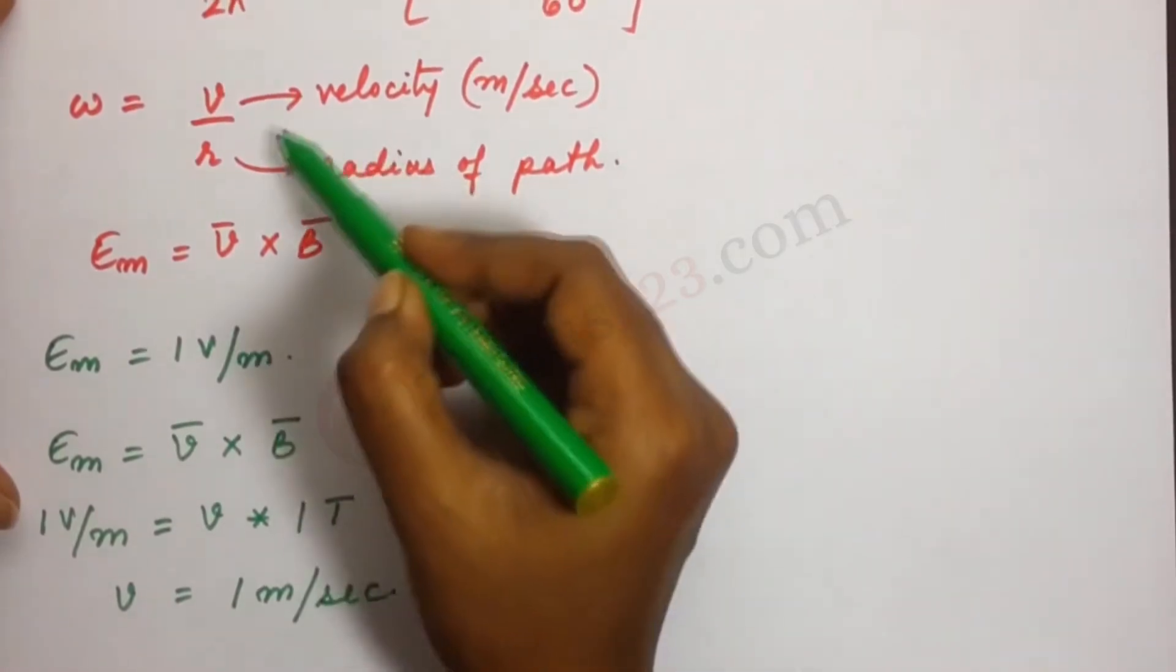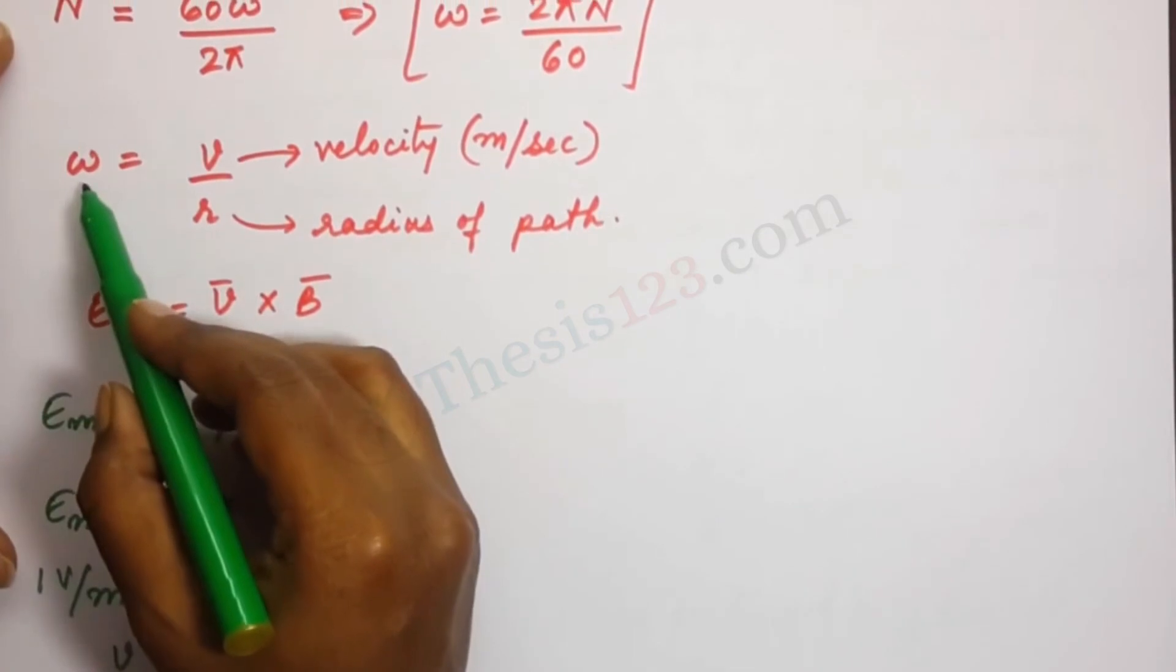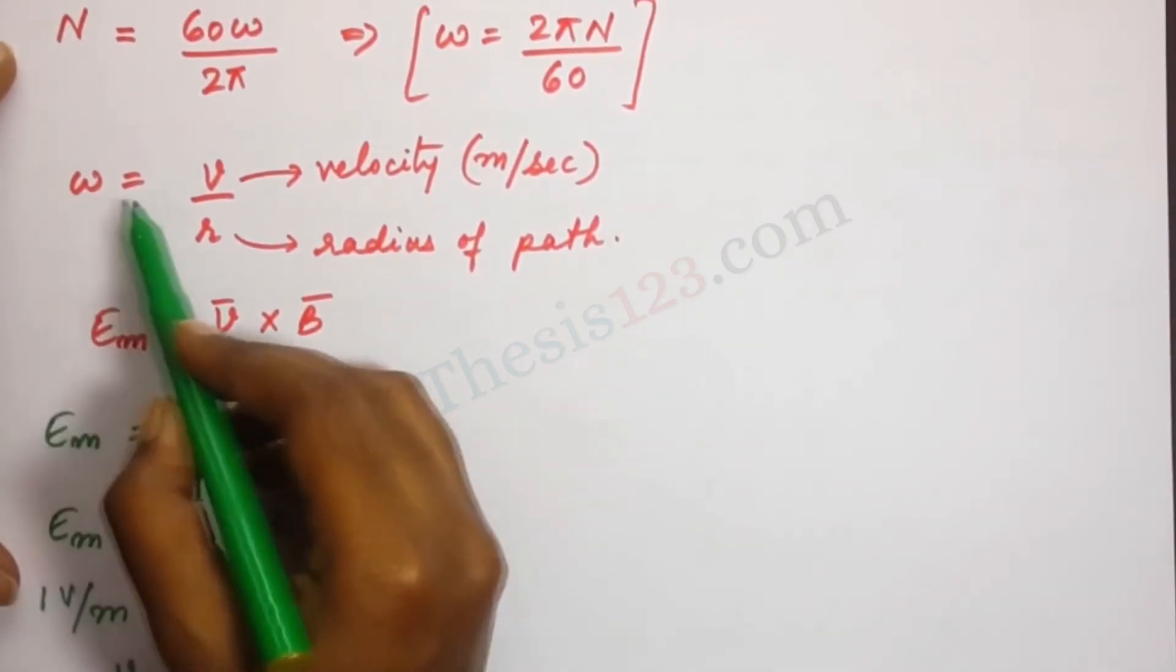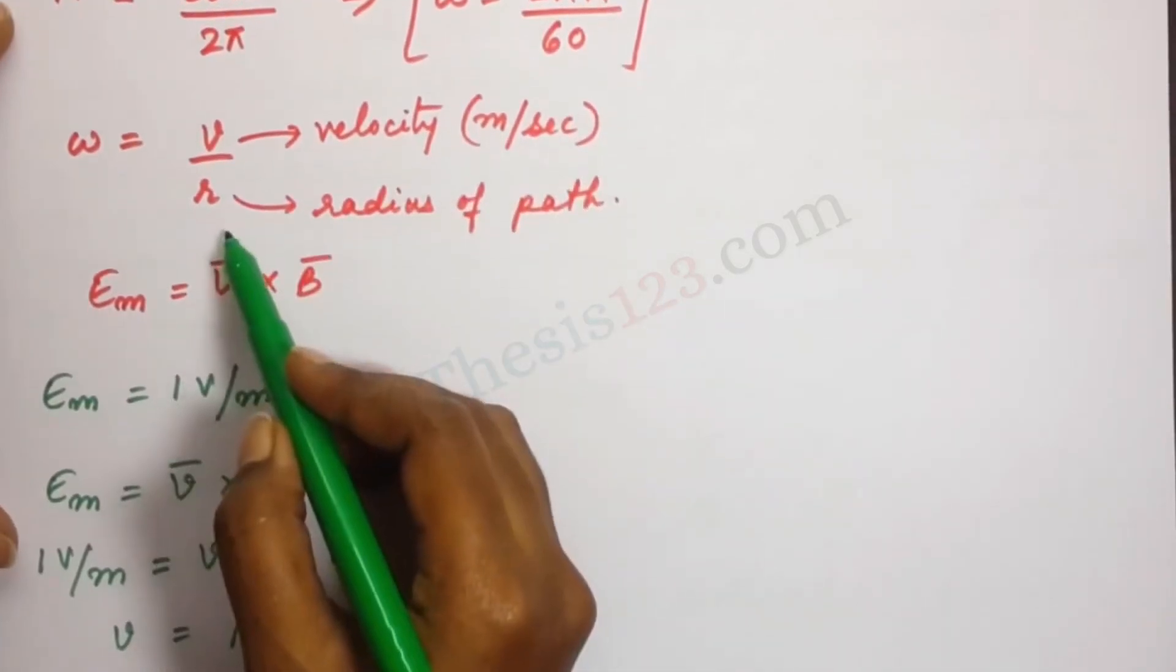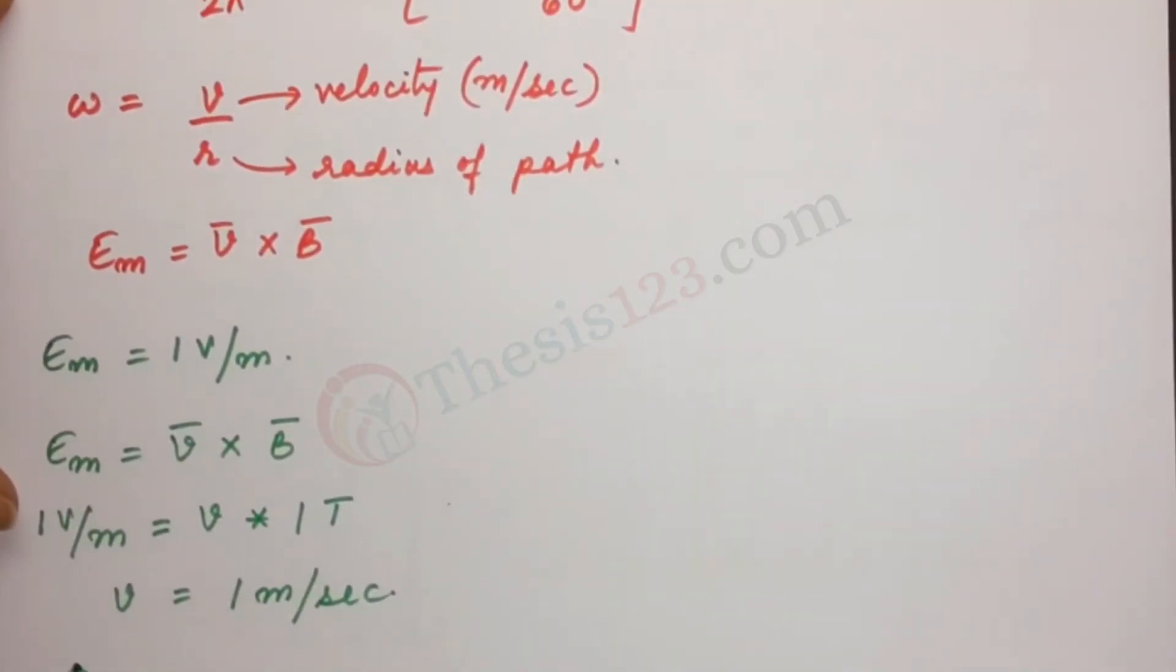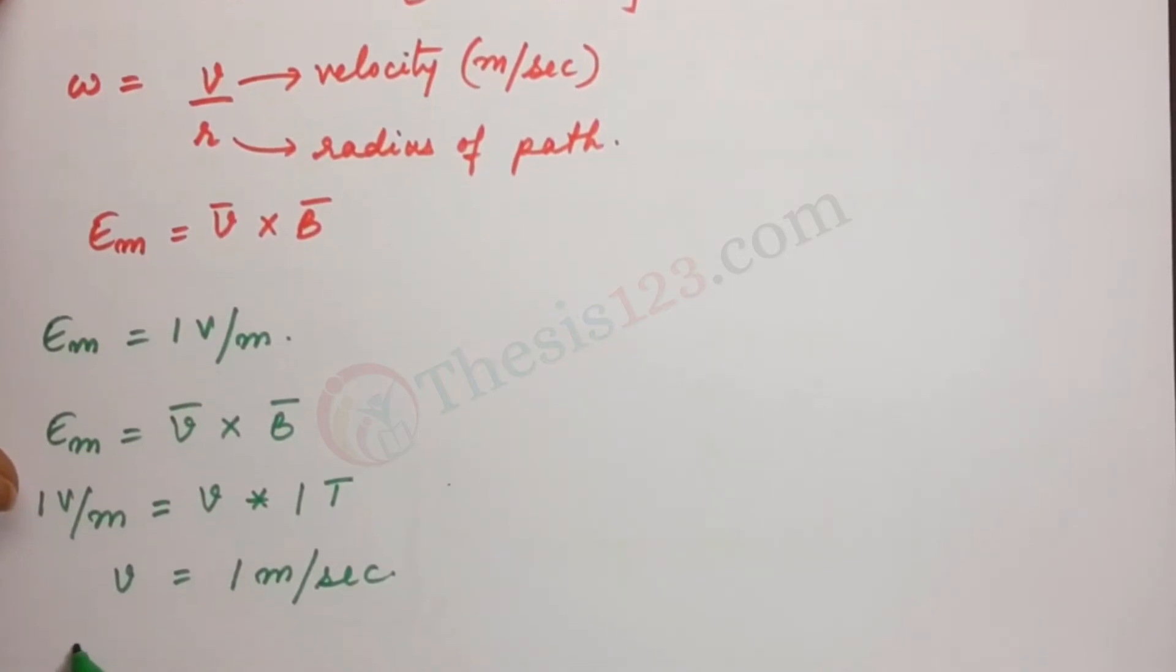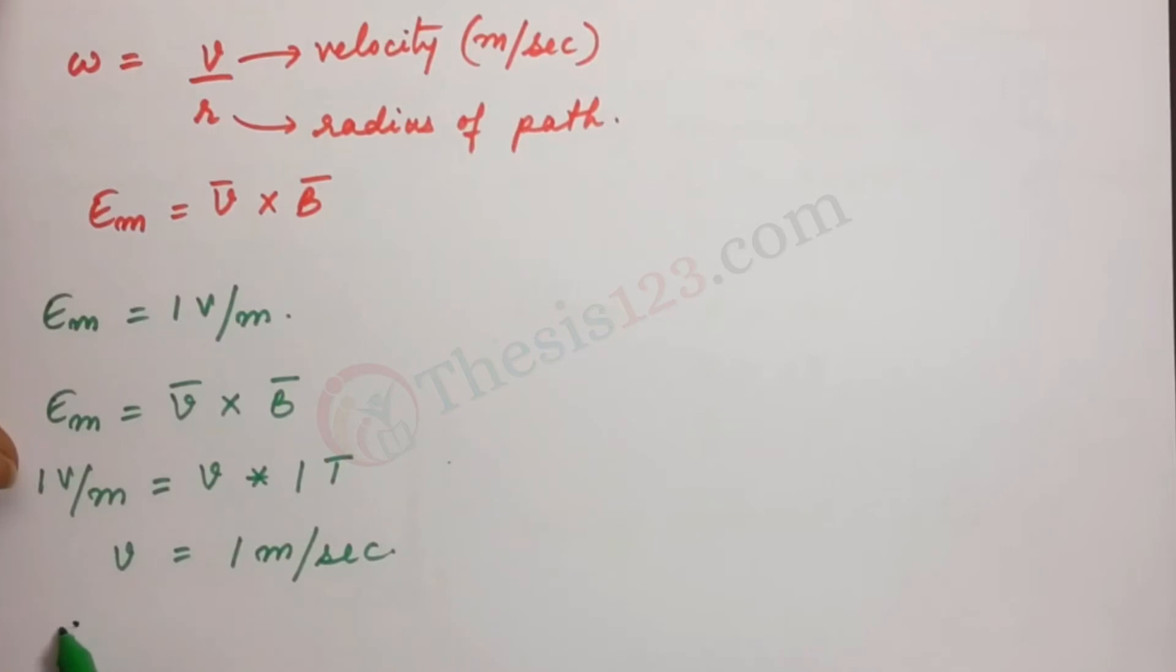So from this expression, the angular velocity equals the velocity in meter per second divided by the radius of the path. R is also 1 meter according to the figure given to us. V equals 1 meter per second. That gives us omega is 1 radian per second.